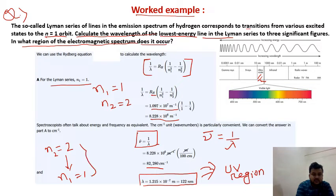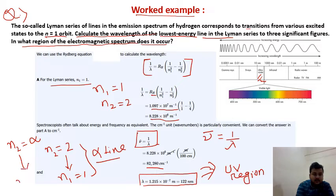This transition from n₂=2 to n₁=1 is called the Lyman alpha line, giving the lowest energy transition. If the question asks for the highest energy line in the Lyman series, then n₂ must be taken as infinity and n₁ stays fixed at 1. With increasing principal quantum number from 2 toward infinity, the energy difference from the ground state becomes larger, meaning higher-energy lines correspond to transitions from higher energy states down to the ground state.